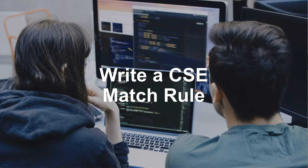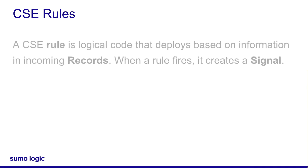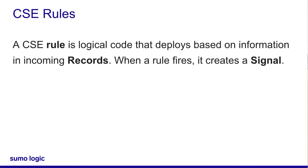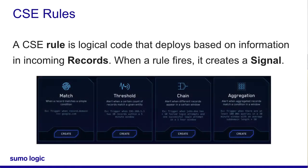That's a great idea. You can learn a lot from getting your hands dirty. So a rule is just a piece of code that decides whether a record creates a signal. And CSE has four types of rules: match, threshold, chain, and aggregation.